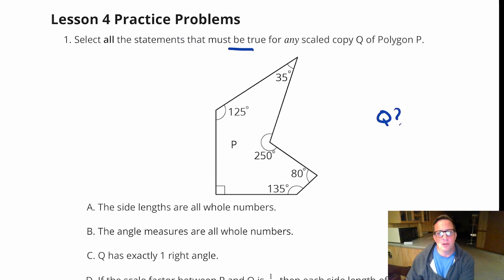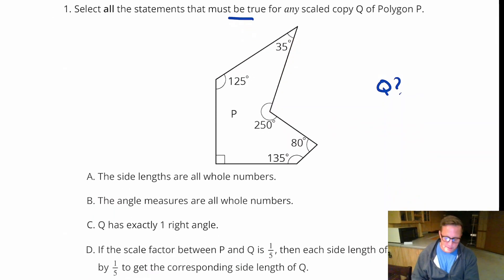So for A, it says the side lengths are all whole numbers. Well, maybe, I'm not sure. But if you look at the original shape right here, there are no numbers ever given for any of the side lengths. There's no side length here, there's nothing here, there's nothing there. So we would be strictly guessing that that is true. So not enough info.